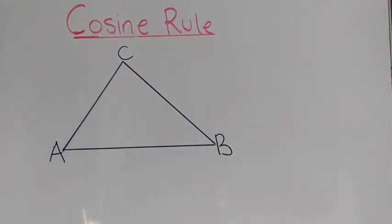Welcome to another mathematics lesson. This is your presenter, Mr. Mling. This is part two of my lesson under cosine rule. In part one, we looked at how you can apply the cosine rule when you are given all three sides — how do you find an angle when all three sides are given on a non-right-angle triangle.